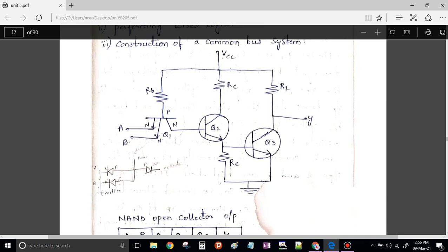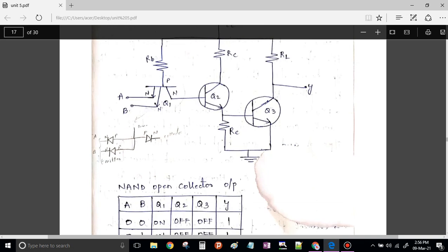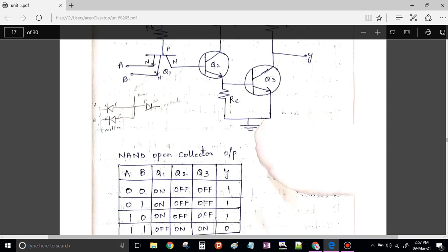Now assume that both the inputs A and B are the ones through which I am going to apply my input. When both the inputs are 1-1, what will be the state of your Q1? When both the inputs are 1-1, can I say my Q1 is off? Why? Because I can see 1 is connected to N. That means positive is connected to negative, which makes this Q1 transistor off.